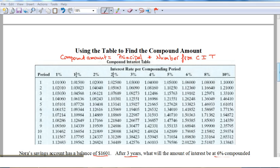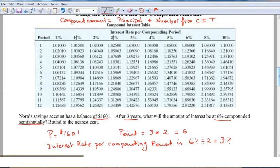We're not going to use the formula in this example. Let's look at what the example says: Nora's savings account has a balance of $1601. After three years, what will the amount of interest be at 6% compounded semi-annually, rounded to the nearest cent?